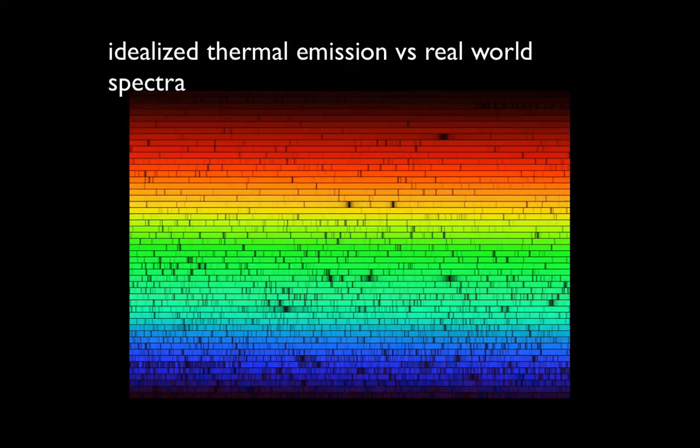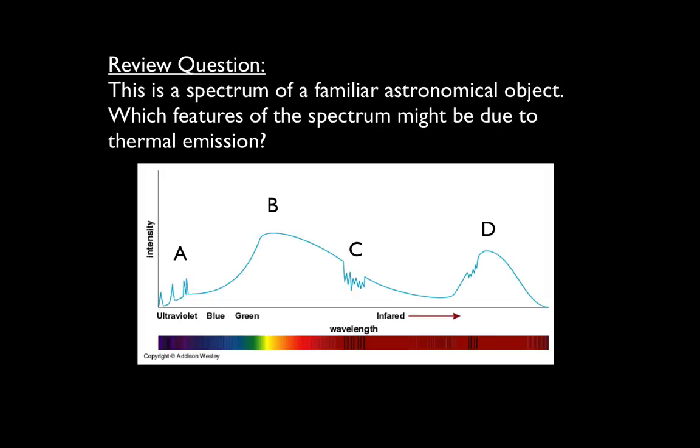I want to leave you with a review question that will hopefully allow you to test your knowledge that you've gained while watching this video. Below is a spectrum of a familiar astronomical object. Think about these questions, and then in class next time, I'll discuss where the spectrum comes from and what we're looking at.